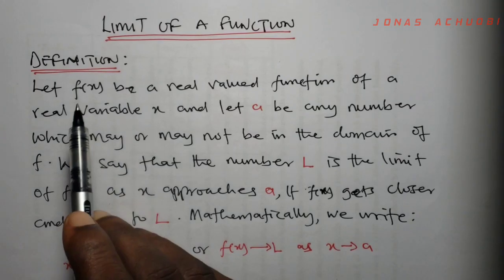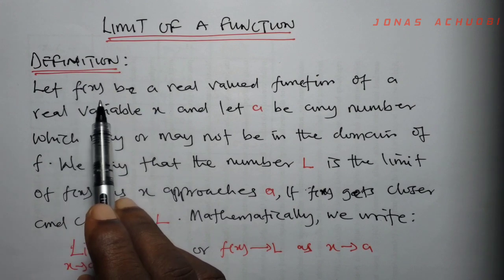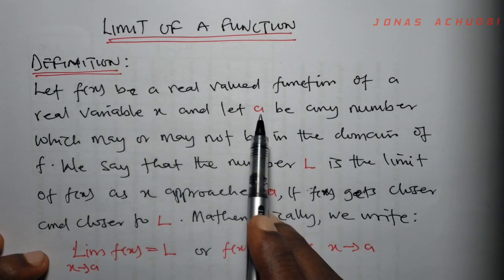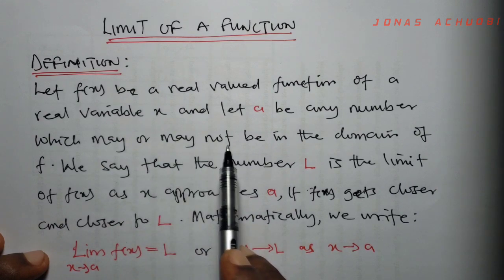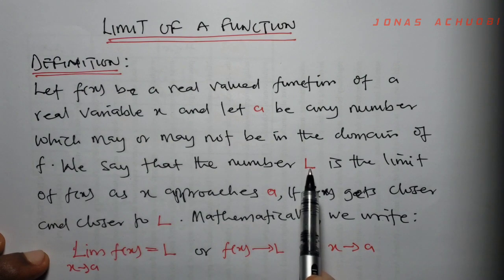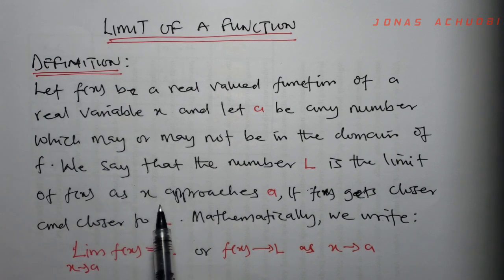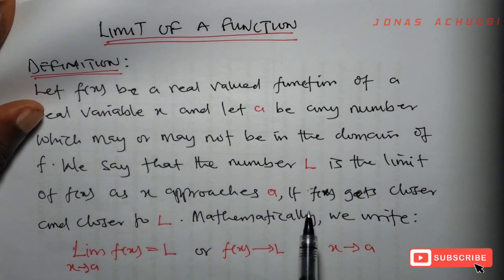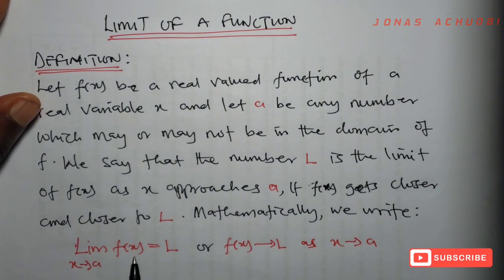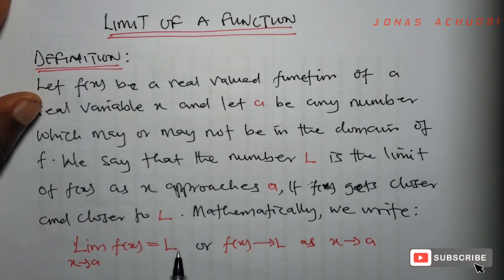Limit of a function. Definition. Let f of x be a real valued function of a real variable x, and let a be any number which may or may not be in the domain of the function f. We say that the number L is the limit of f of x as x approaches a, if f of x gets closer and closer to L. Mathematically we write: limit of f of x as x approaches a equals L, or f of x approaches L as x approaches a.